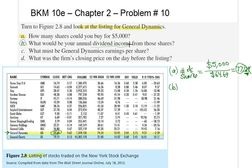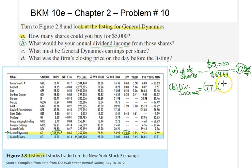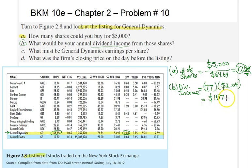The column representing the dividend income is this one over here, where dividends per share were two dollars and four cents. Therefore, our dividend income would simply be equal to 77 shares times two dollars and four cents per share, for a total of one hundred and fifty-seven dollars and eight cents.